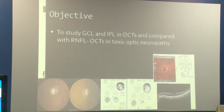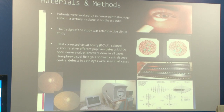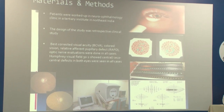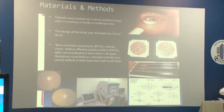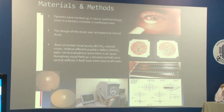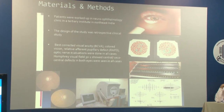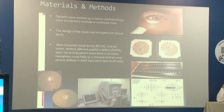The objective of the study is to evaluate the GCL and IPL in OCT and compare them with RNFL OCT in toxic optic neuropathy. This was a retrospective study done in the neuro-ophthalmology clinic at a tertiary institute in Northeast India. Best corrected visual acuity in LogMAR, color vision testing with Ishihara, relative afferent pupillary defect, and optic nerve evaluation were done in all cases.